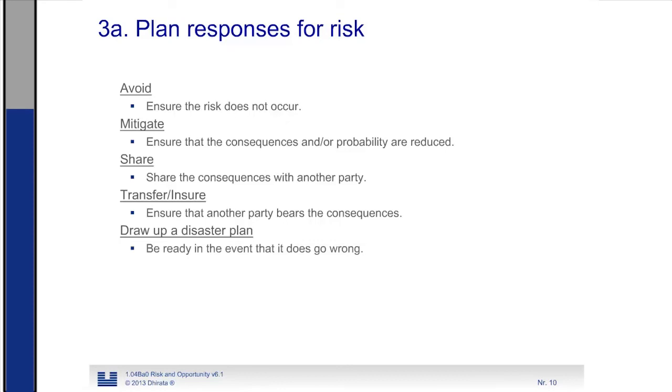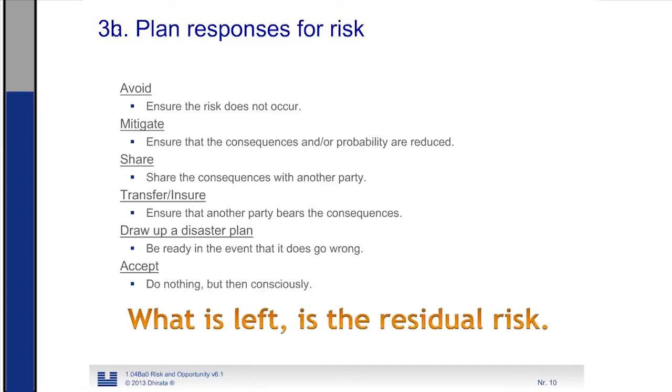Then we can draw up a disaster plan so that we are ready in the event that something is happening. In fact, we are accepting the risk as is, but we think about what we are going to do when the risk really occurs so that we don't have to invent or to develop a recovery plan when it really happens because it's already developed at the start of the project. Finally, we could do nothing, but we take a conscious decision that we accept a specific risk. This is the category of acceptance. And if we are going to do this with all these risks that came out of the quantitative analysis, then it's impossible to get a zero risk. So we always have a so-called residual risk on the project after that we have developed and implemented all our risk responses.